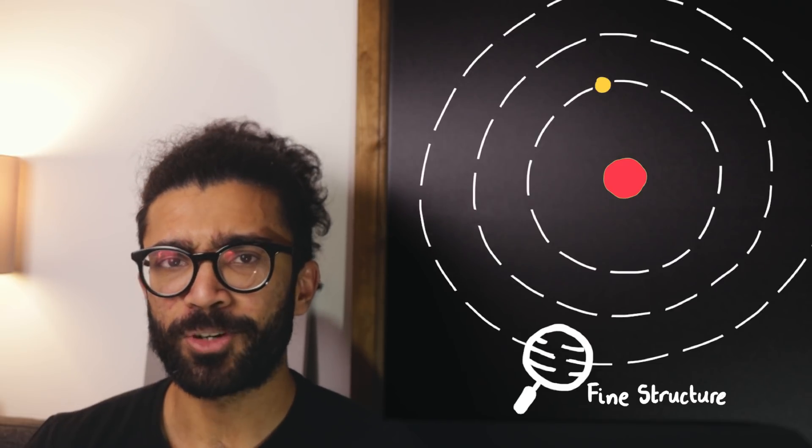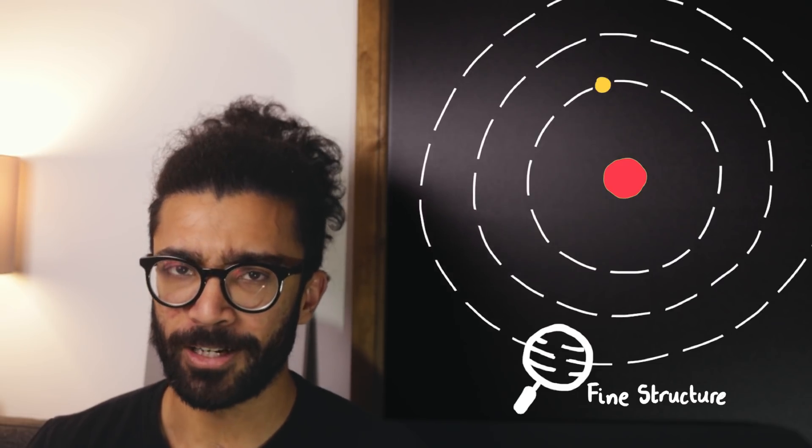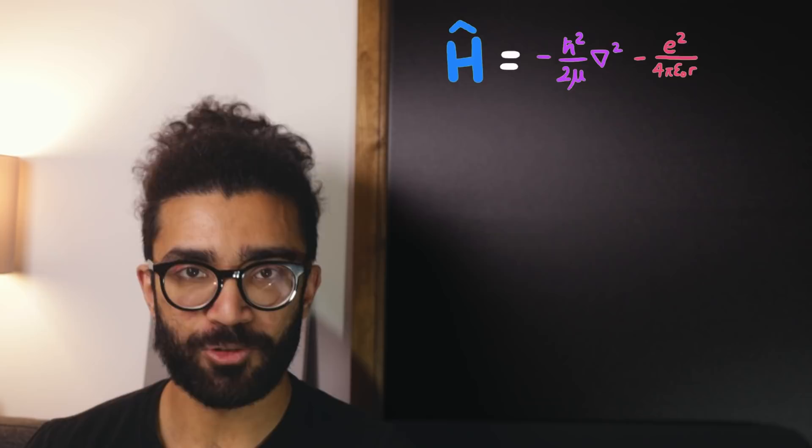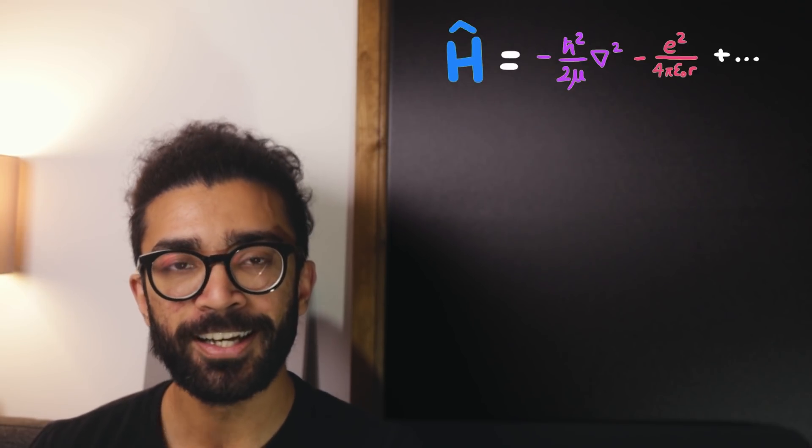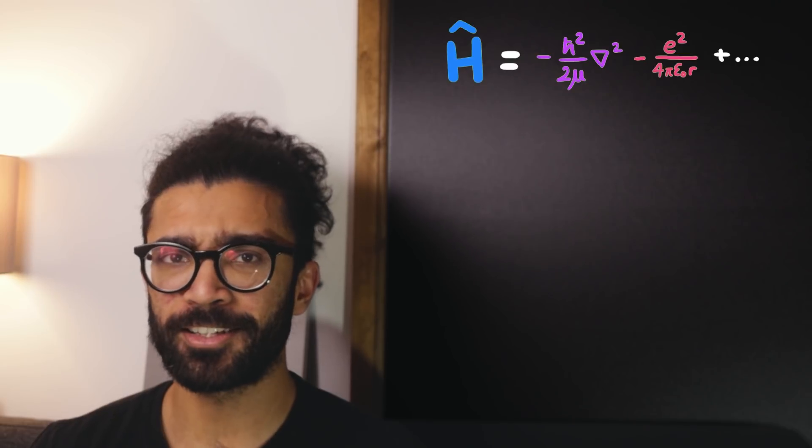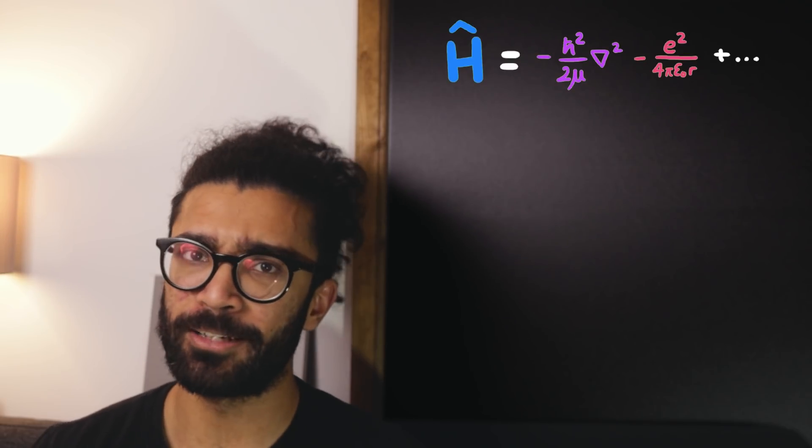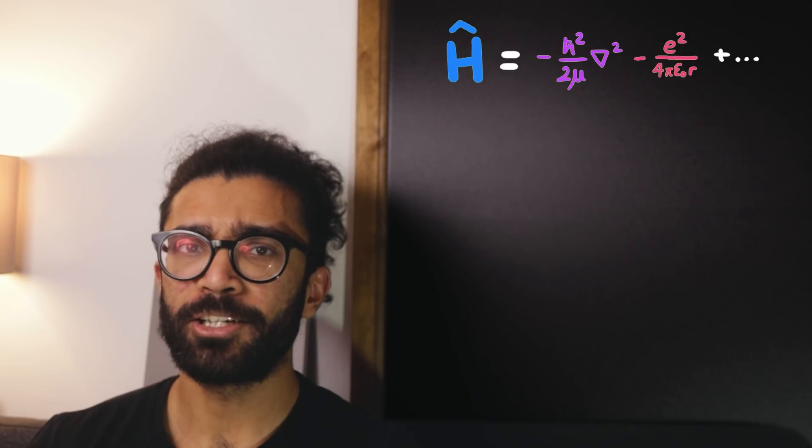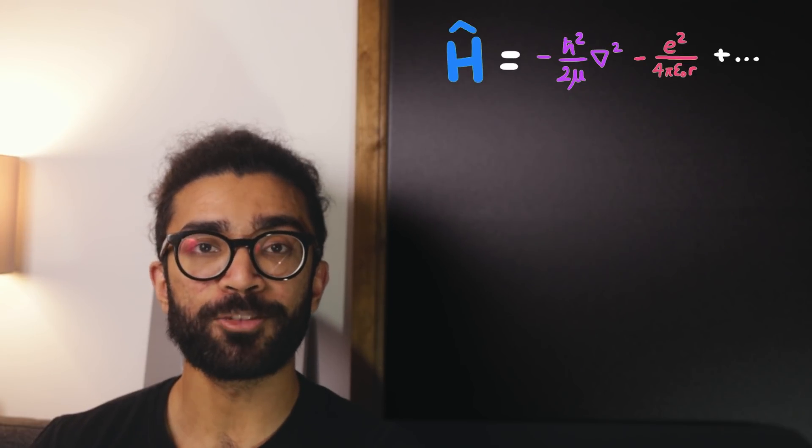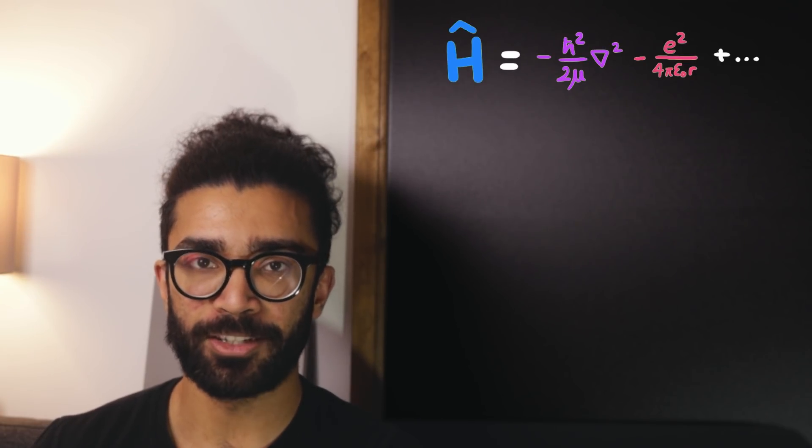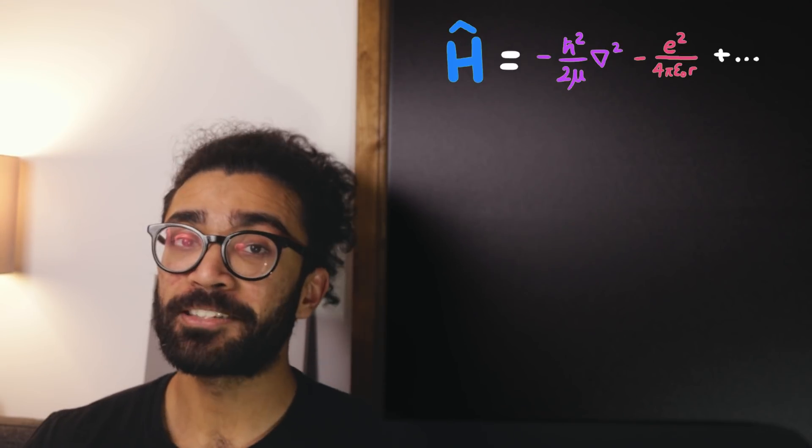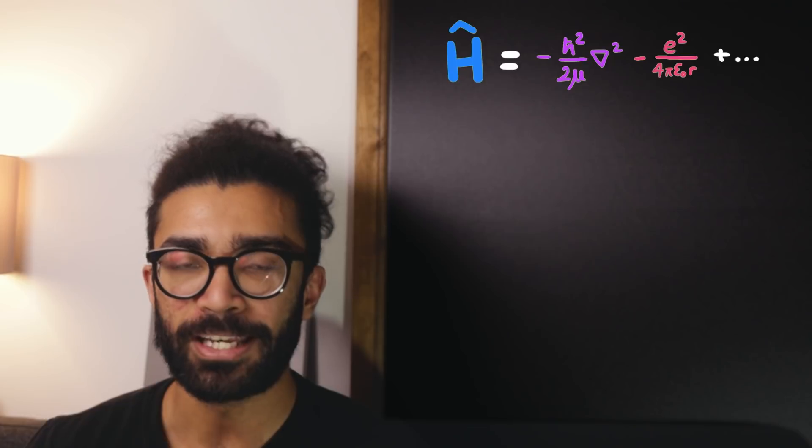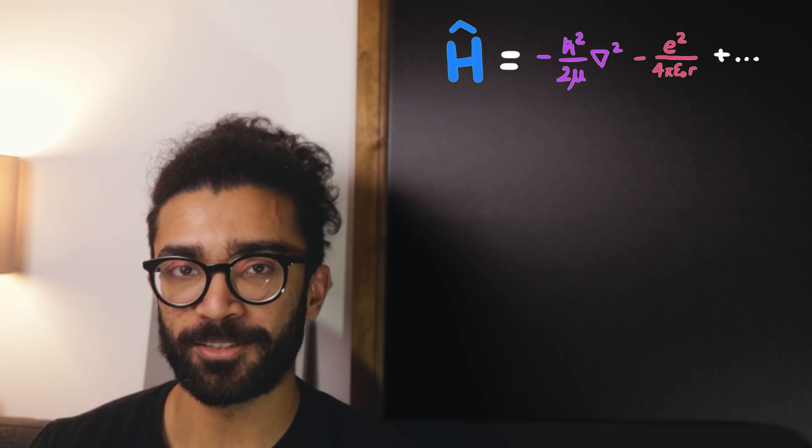So how do we explain this fine structure using our quantum mechanical theory? Well, one way to explain the fine structure using our theory is to introduce more terms to the Hamiltonian. As it turns out, we haven't quite considered all forms of energy within our system. There are some energy contributions that are admittedly much smaller than the kinetic and potential energy, hence resulting in a much finer structure. But the fact is that we haven't even thought about them yet, and hence we haven't yet been able to predict the fine structure.